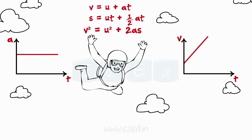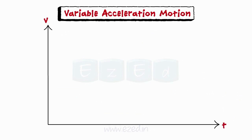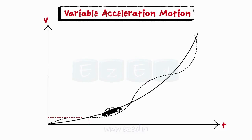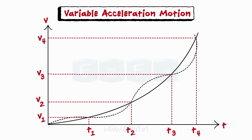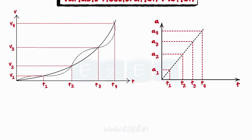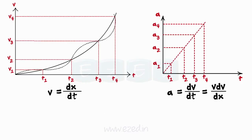These are the equations for uniform acceleration motion. Variable acceleration is usually defined as a function of time, velocity, or position. Suppose the car covers a particular distance in which its velocity keeps on changing irrespective of time, then the car is said to have variable acceleration motion — meaning the car's acceleration is increasing with respect to time. These are the equations for variable acceleration.